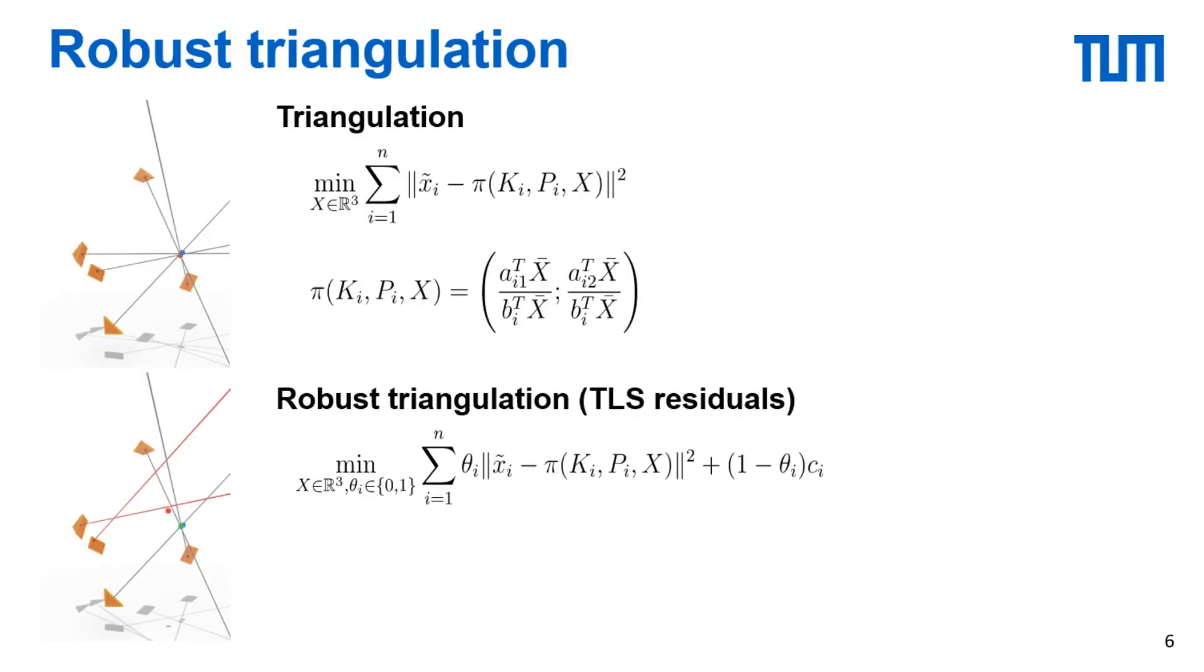We will now go into how to reformulate the robust triangulation problem as a QCQP. We consider the truncated least squares extension of the standard L2 reproduction loss function, for which we introduce binary inlier parameters theta_i that equal 1 for inliers and 0 for outliers. The first difficulty comes from the fact that the reproduction loss function contains a fraction in the problem variables. There are two methods for dealing with this in the existing literature and we will show how to extend both of them to the robust case.